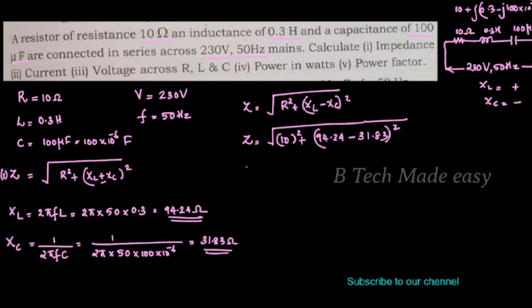The solved value is 63.2 ohm, which is equal to 63.2 ohm. This is the circuit impedance.